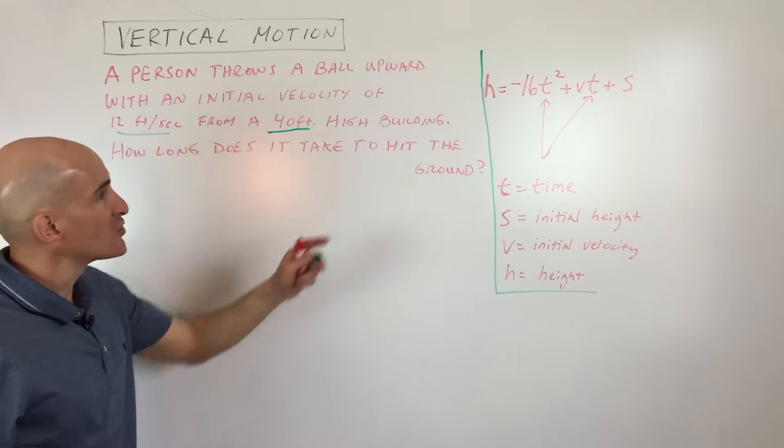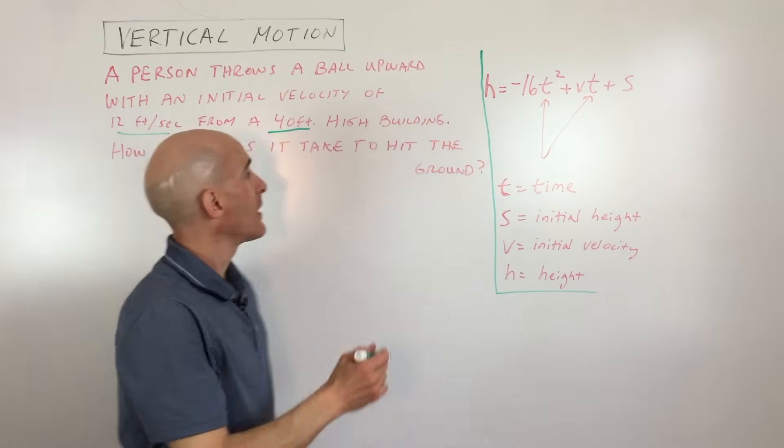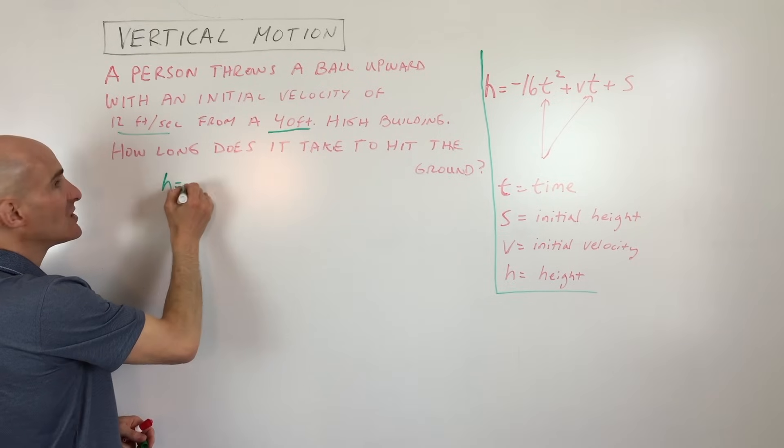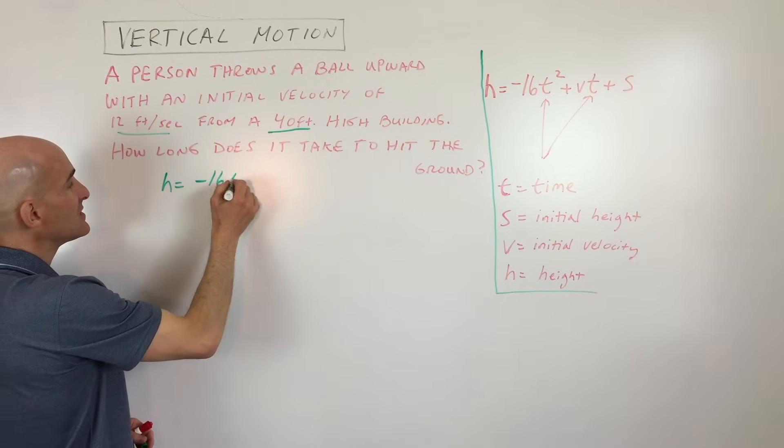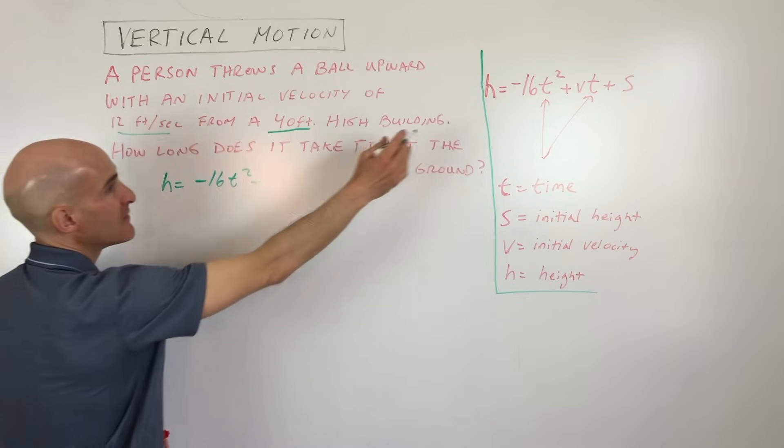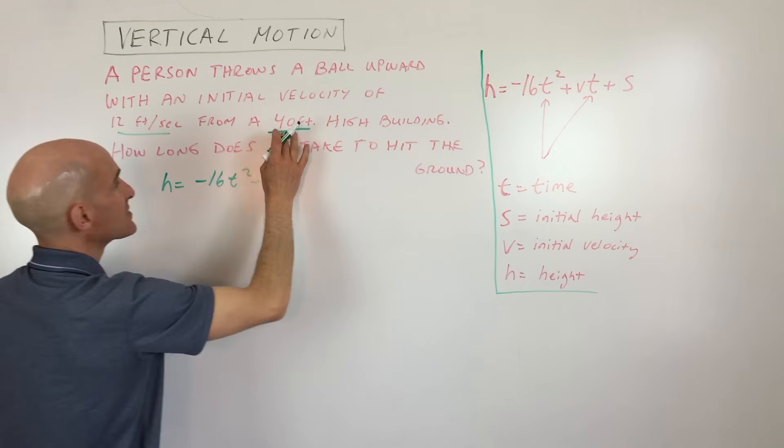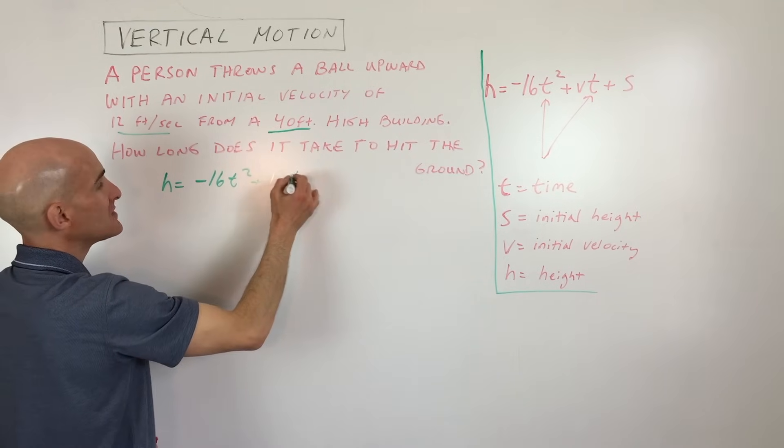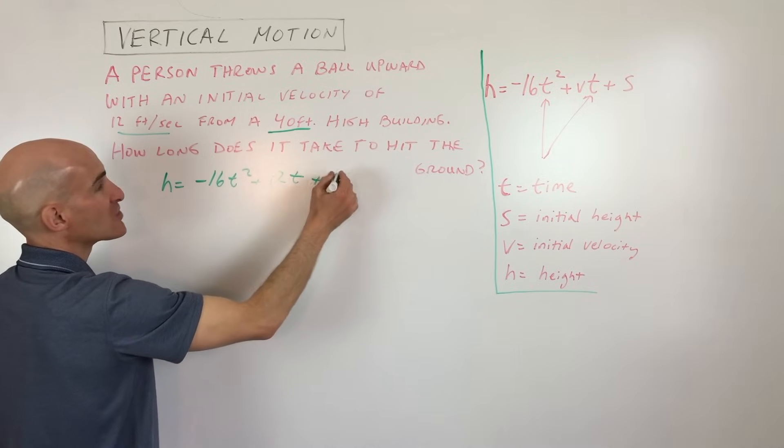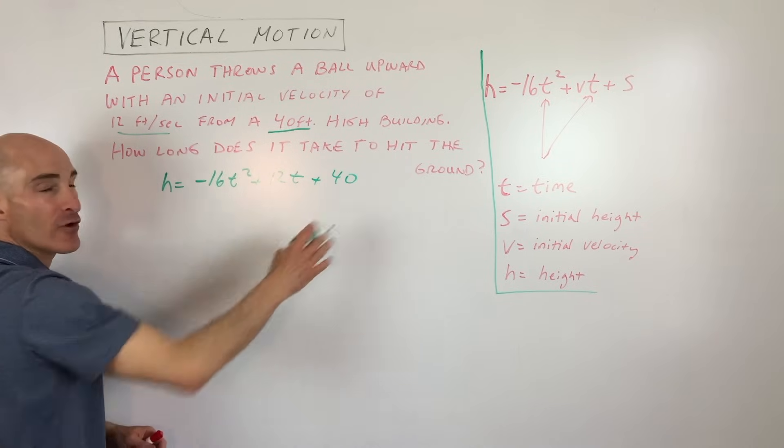All right, so what we're going to do is we're going to use our vertical motion model equation here. And what we have is we have h equals negative 16t squared plus v, which is the initial velocity, that's 12 feet per second, so 12t plus the initial height, which is 40. So now we have our equation.